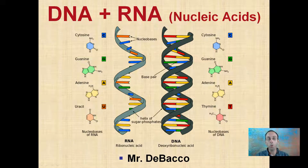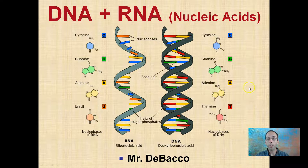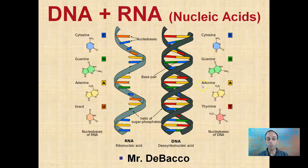Here we're going to look at the macromolecule nucleic acids. Keep in mind that this nucleic acid category is made up of both DNA and also RNA. We see DNA depicted here on the right and RNA depicted here on the left. We're going to go into a little bit of detail on how you'll be able to distinguish these two different types of nucleic acids.